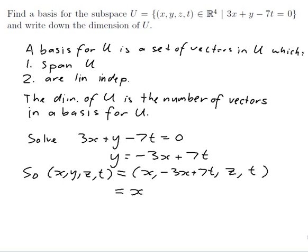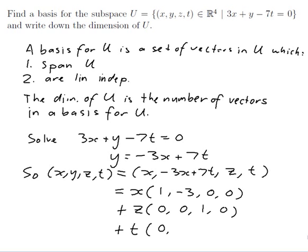Pulling out x: the vector with all the x components has 1 in the first coordinate and minus 3 in the second, with 0s elsewhere — giving (1, -3, 0, 0). Pulling out z: (0, 0, 1, 0). Pulling out t: 0 t's in the first coordinate, 7 t's in the second, 0 in the third, 1 in the fourth — giving (0, 7, 0, 1). So every vector in U can be written as a linear combination of (1, -3, 0, 0), (0, 0, 1, 0), and (0, 7, 0, 1).